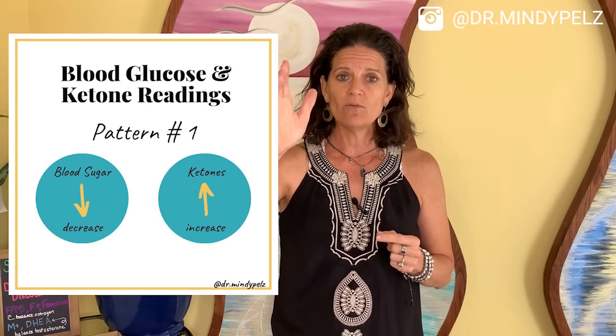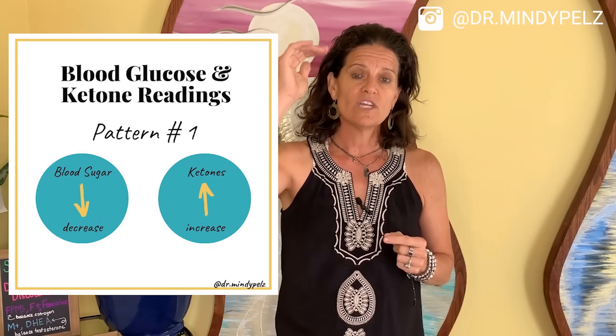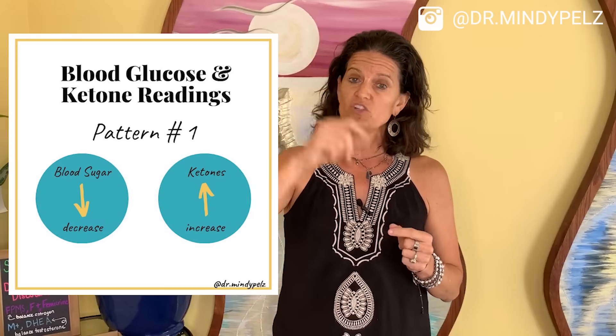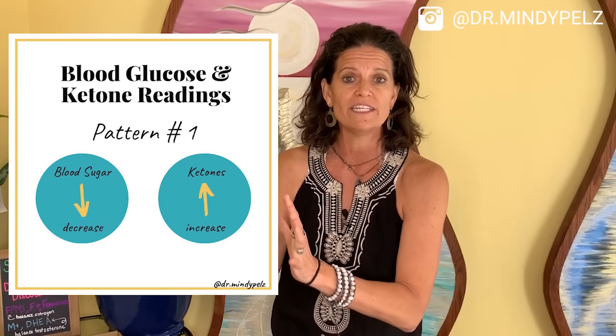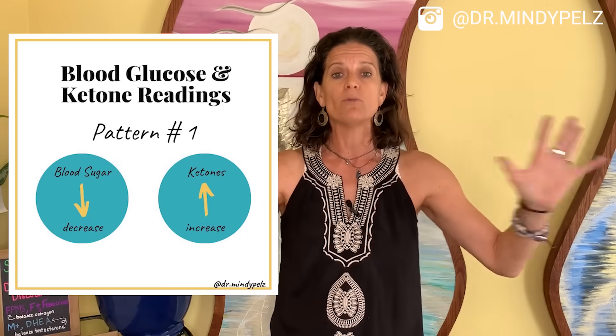With my patients, in the academy, or in the Women's Reset, if I see that first pattern isn't happening and we're throwing a lot of keto and fasting at it, then I go digging deeper — there's another reason that pattern isn't happening. So Pattern 1 is that on your second reading, your ketones are going up and your blood sugar is going down, meaning you're trying to get fat adapted. That's a good, healthy, normal pattern.